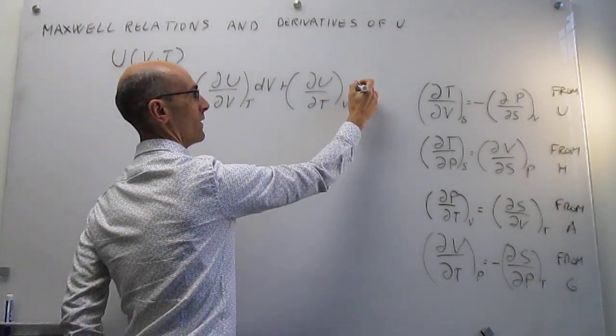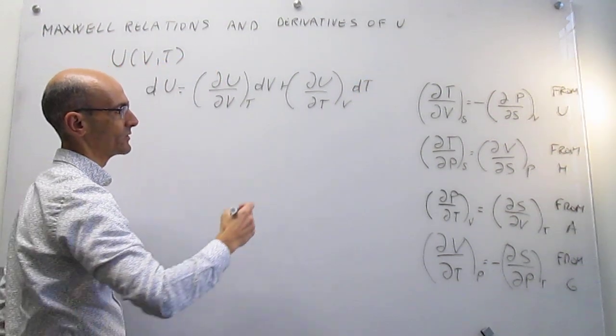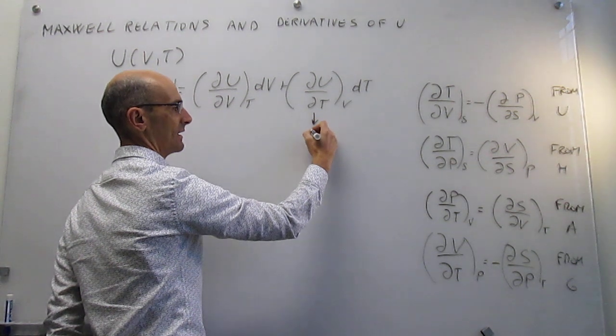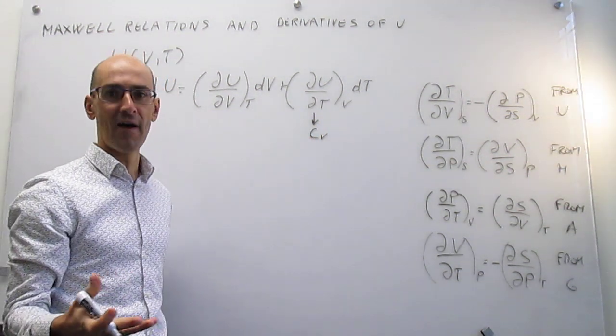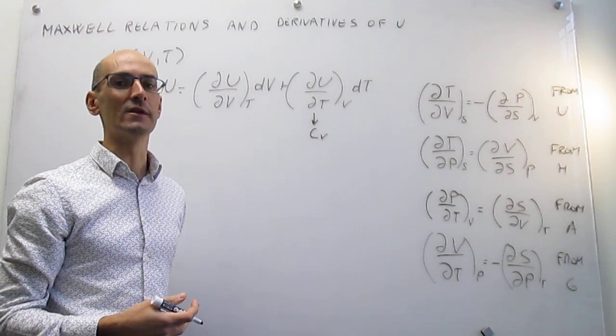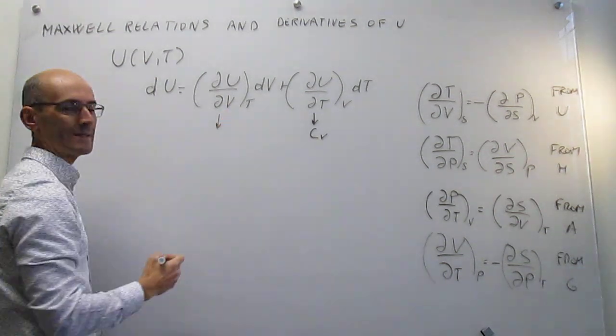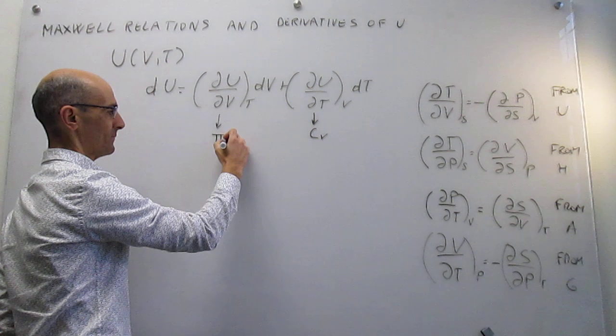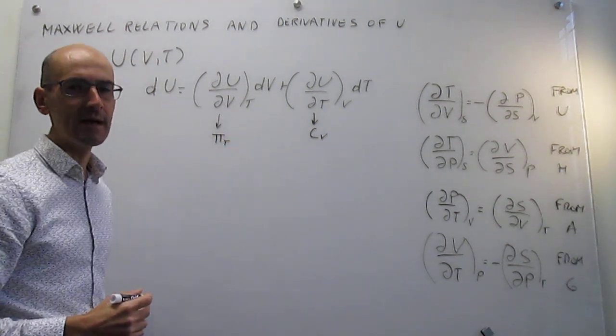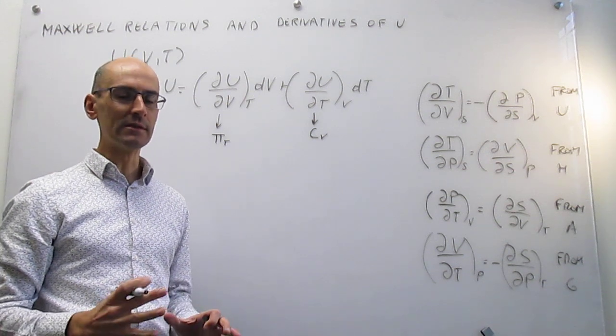And we know what these first derivatives are. Notice that this is the heat capacity at constant volume. That's a value that we can measure in the lab, and we know those values for a variety of substances. And then this was a little bit less clear. We defined that as the internal pressure of a gas, but we didn't know a way to measure it. There were no tables about this.